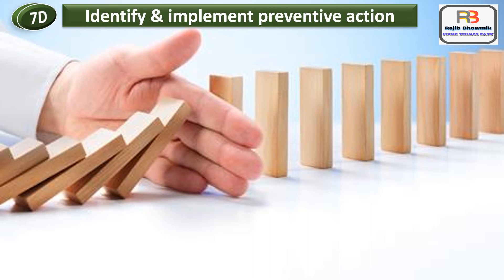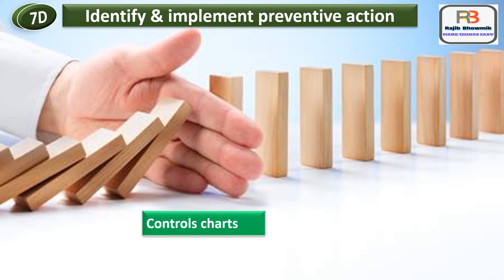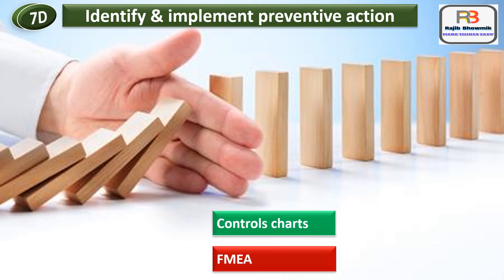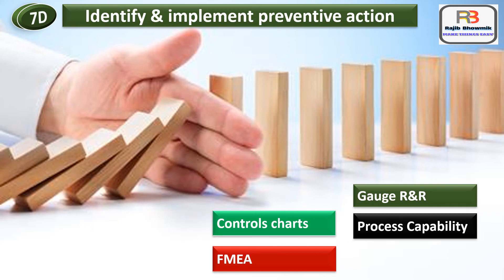7D - Identify and Implement Preventive Action: This step determines what action should be taken to prevent recurrence of the problem. Preventing recurrence is an important part of a problem solution. The team must verify that the outcome of their action plan works and is on target. Various tools to be used are: control charts, FMEA, gauge R&R, process capability analysis, and histograms.